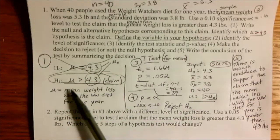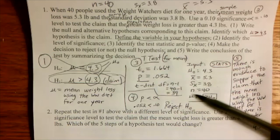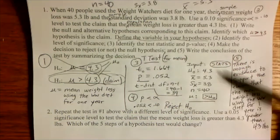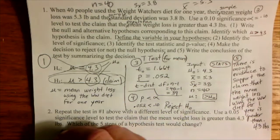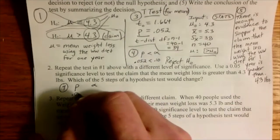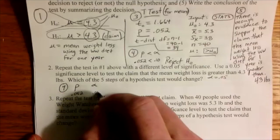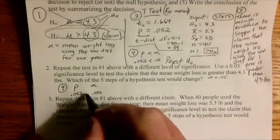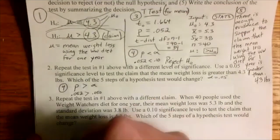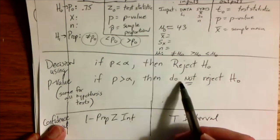Nothing changes about the claim. Nowhere in the test statistic and p-value calculations do you see the value of alpha — that's the only thing we're changing, so nothing changes in step three. What changes comes down to step four. The p-value is still 0.052, but if we set the new alpha to 0.05, then the p-value is slightly larger than alpha. The sign between these two numbers is now greater than, so p is greater than alpha, and we do not reject.